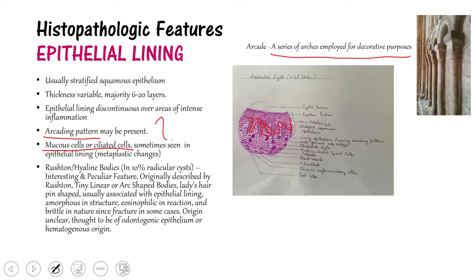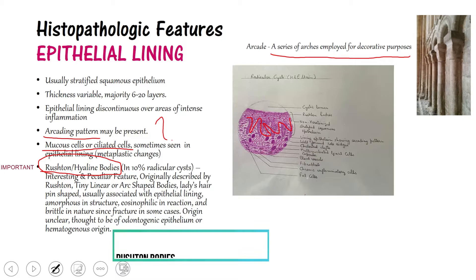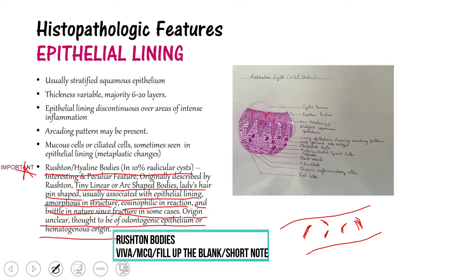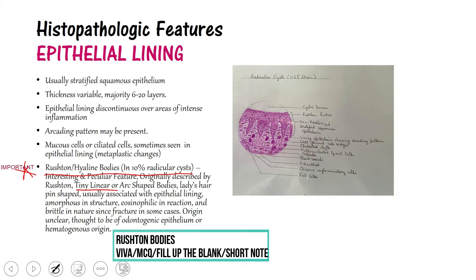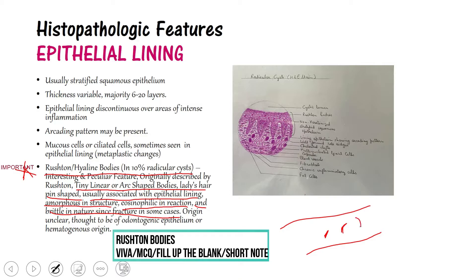One very important thing is Rushton or hyaline bodies. These are seen in about 10% of radicular cysts — this can be a viva question. They are called Rushton bodies because they were first described by Rushton. These are tiny linear or arc-shaped, hairpin-shaped bodies, usually associated with the epithelial lining. They are amorphous in structure, eosinophilic in reaction, and brittle in nature. In the epithelium you will see arc-shaped, hairpin-shaped, or curved pinkish bodies. Their origin is unclear — they are thought to be of odontogenic epithelial or hematogenous origin.